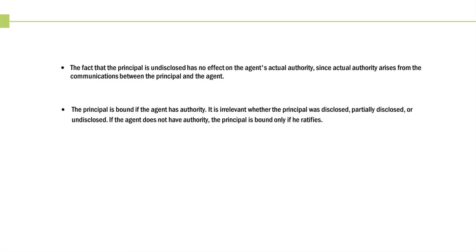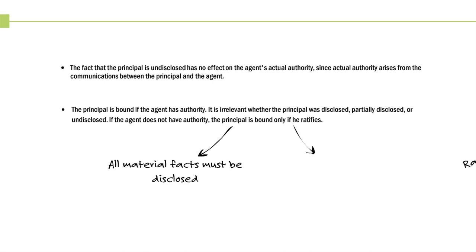If the agent has no actual and no apparent authority, the principal can still be bound if they choose to ratify. For the principal to ratify, the third party must know of the existence and identity of the principal — it's almost as if the agent had apparent authority, but they don't; the agent is purporting to work on behalf of the principal while trying to create it themselves. For a principal to ratify, all material facts must be disclosed, and they must ratify the entire transaction, not just part of it.